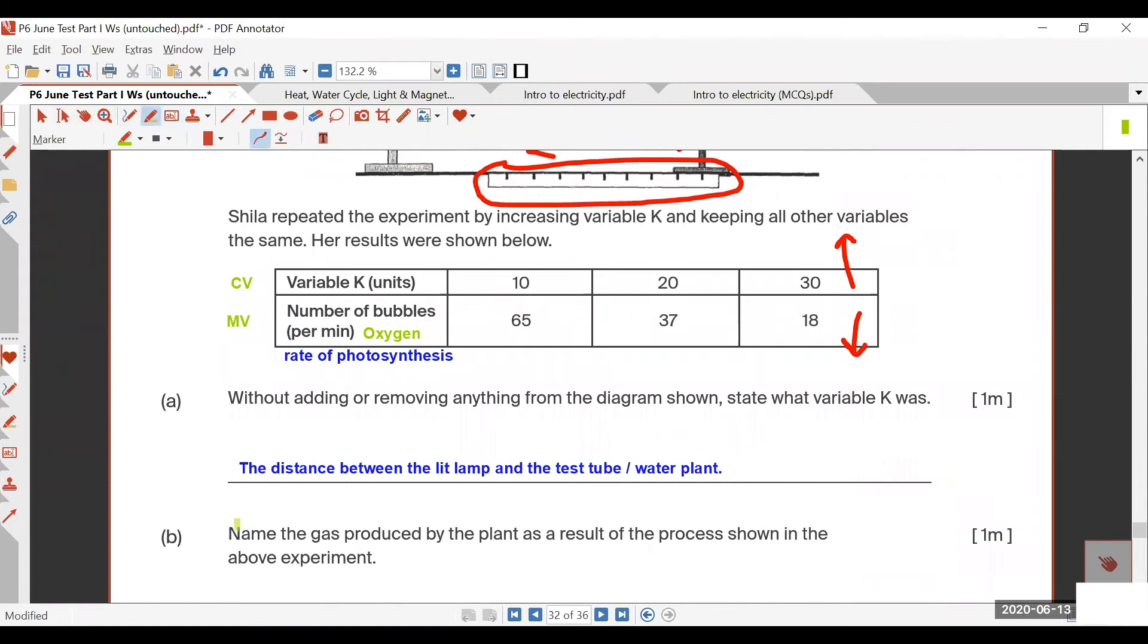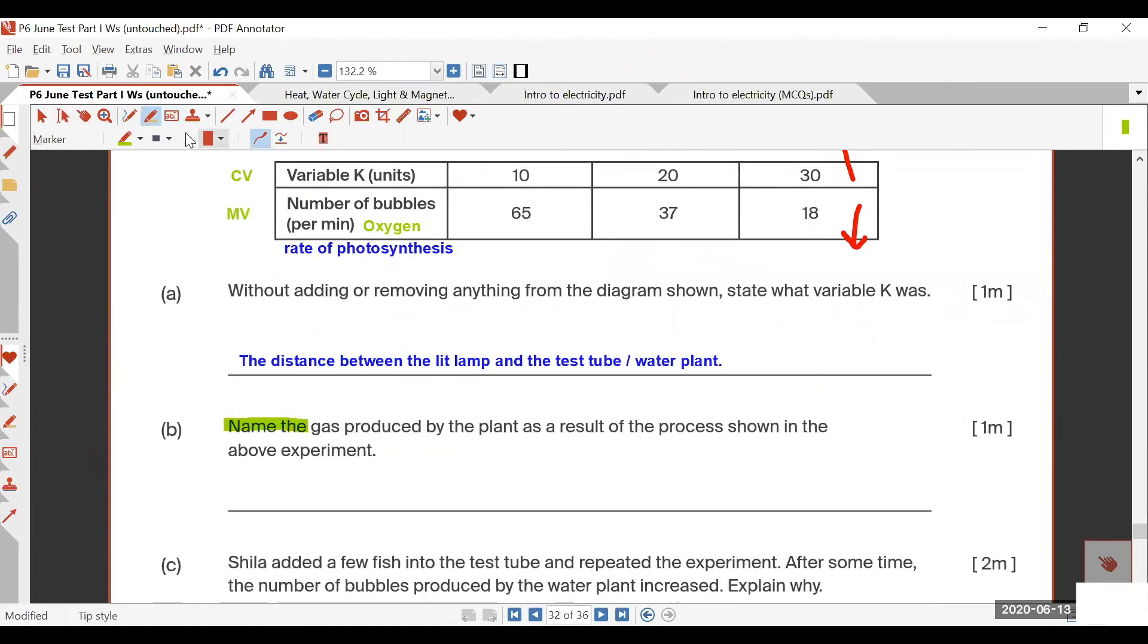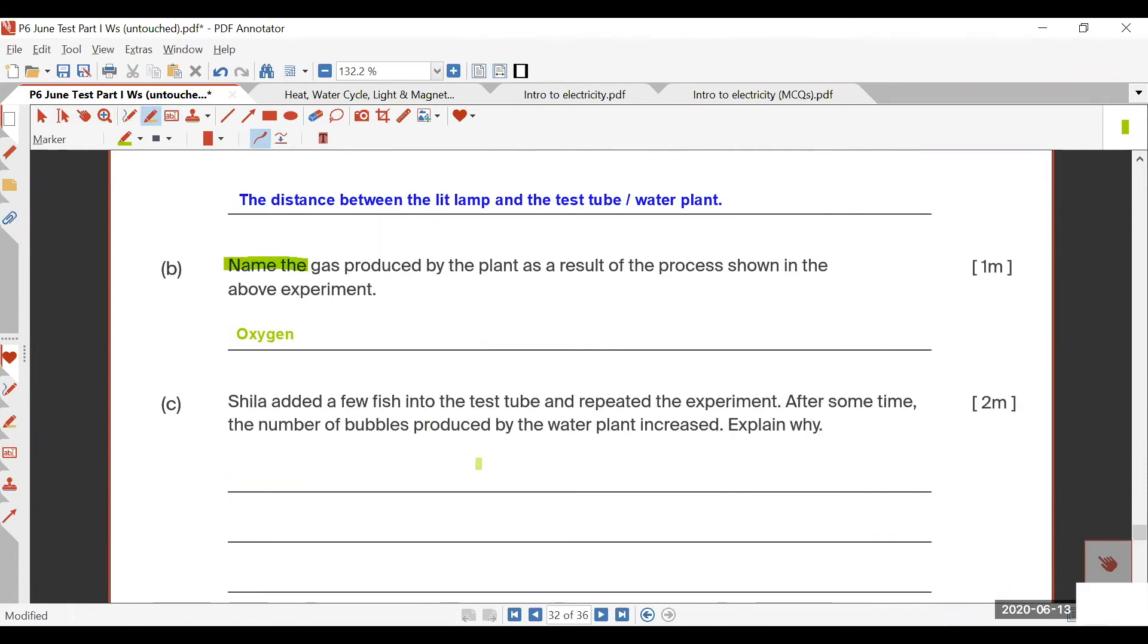We have the name of the gas produced, of course, it's my oxygen. If you get oxygen, you get one mark. So Sheila added a few fish in the test tube and repeated the experiment. After some time, number of bubbles produced by the water plant increased. That means my rate of photosynthesis increased. But you need to explain why.